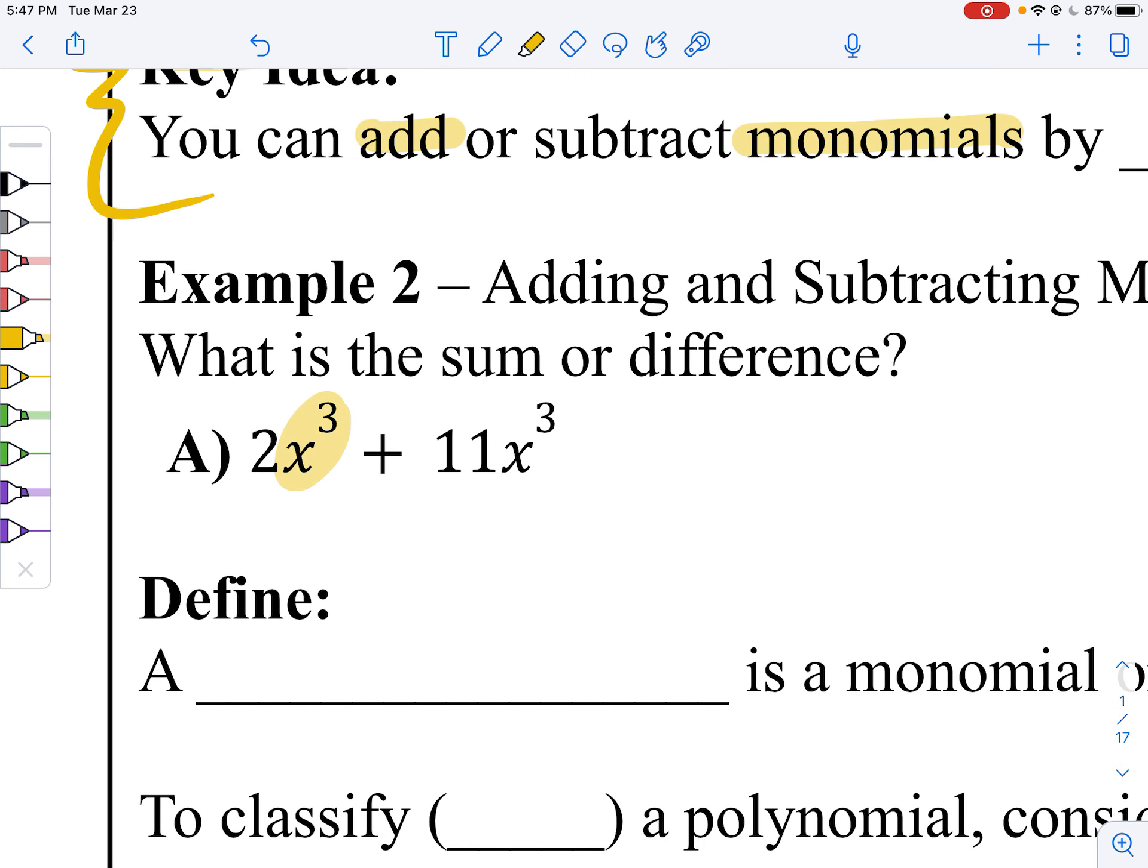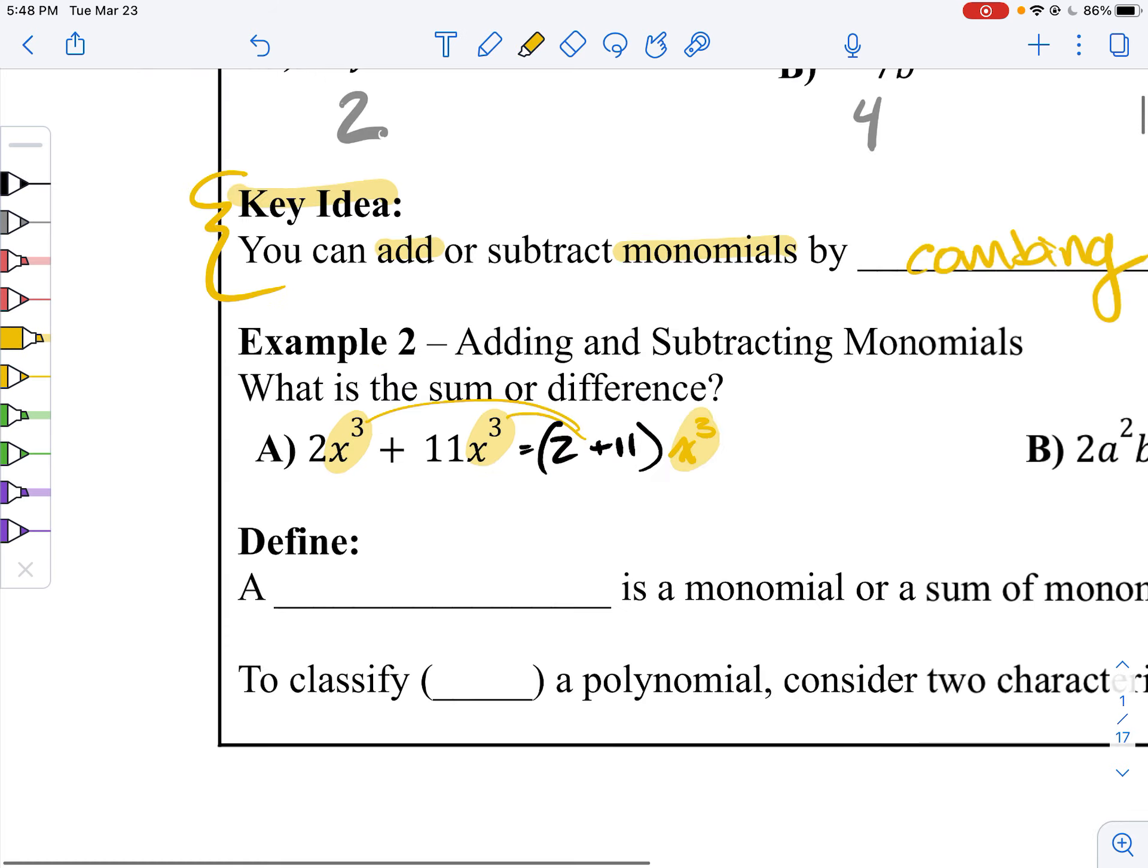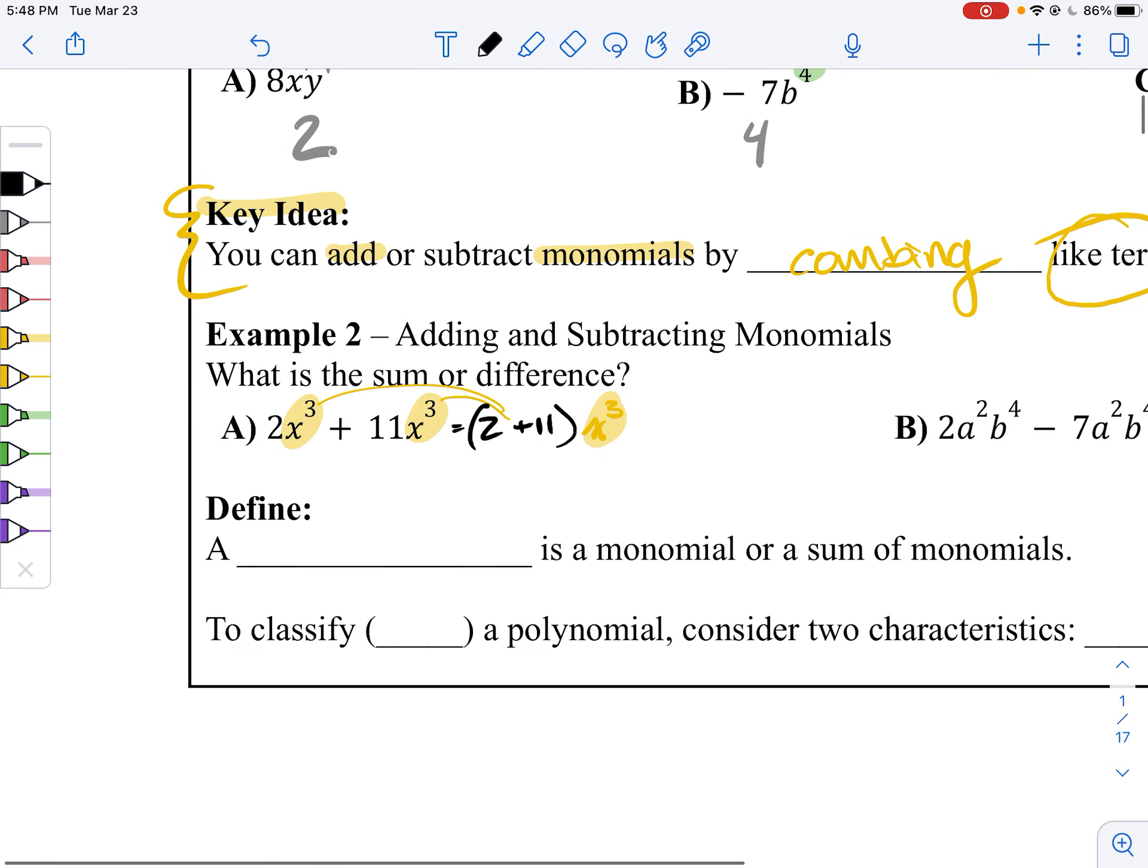Here we have two guys with the same degree. They're both x cubed. So you can consider this as distributing an x cubed out of each term. So that's the same thing as 2 plus 11 times x cubed. 2 plus 11 is 13. So this gives us 13x cubed.